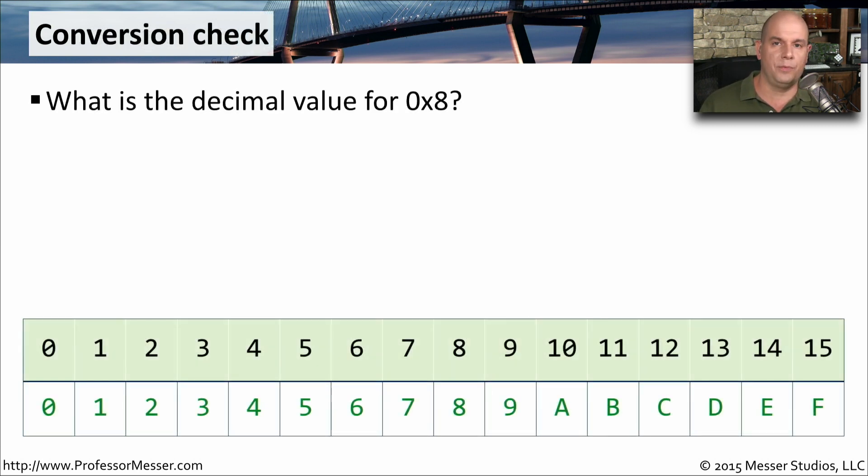Let's use this conversion chart to perform a couple of conversions between decimal and hexadecimal. Our first question is, what is the decimal value for 0x8? That 0x specifies that this is a hexadecimal value. So 0x8 is 8 in hex, and if we look at our conversion chart, 8 in hex happens to equal 8 in decimal as well. Let's do another one. What's the decimal value for 0xC? If we look at our conversion chart, C is equal to 12 in decimal.